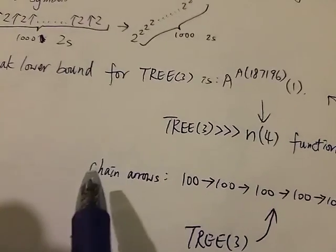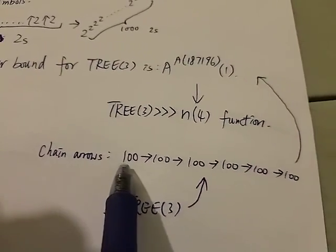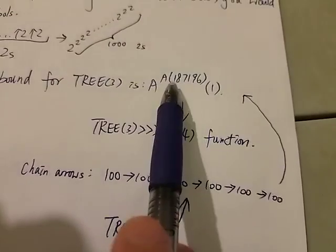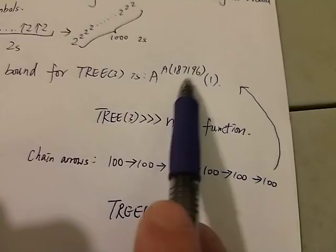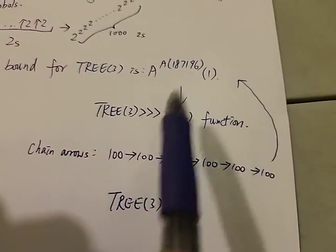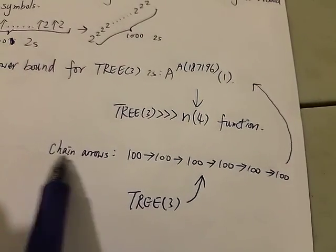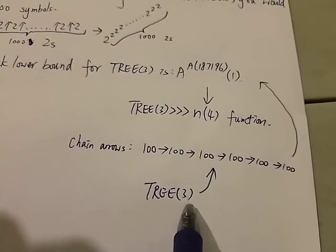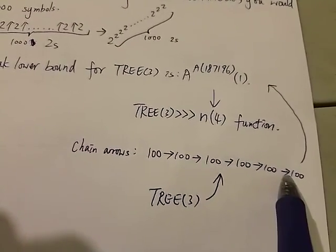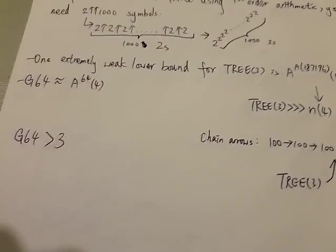Again, we know that the chain arrow notation can make numbers way bigger than this. So for example, something like this is way bigger than this. However, even the powerful chain arrow notation cannot represent TREE(3). So it means TREE(3) is way bigger than this, which is way bigger than this. And that's just how crazy TREE(3) is.